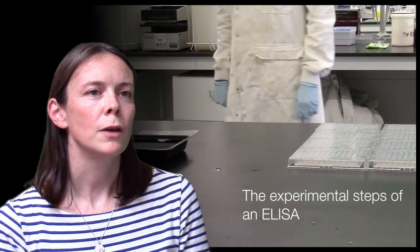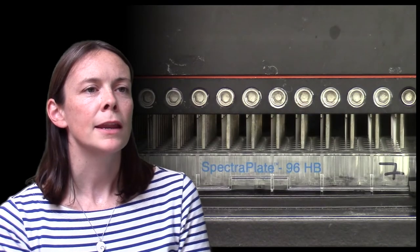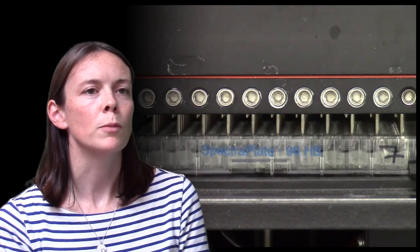ELISA plates were coated overnight with an excess of the HIV envelope protein that was used in the vaccine and then any unbound protein is washed off using a robot.